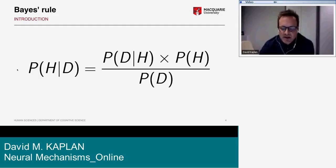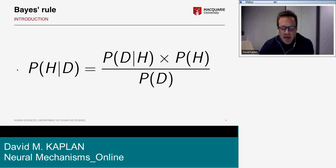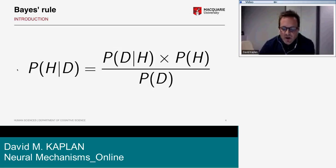The action with the minimum expected loss is the best action the agent can take given her beliefs. Cognitive scientists have been increasingly using Bayesian decision theory as a modeling framework to address a broad range of different phenomena.